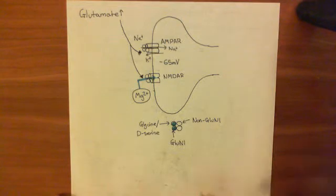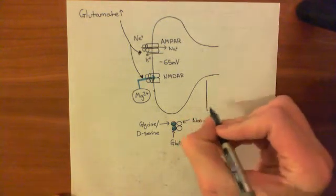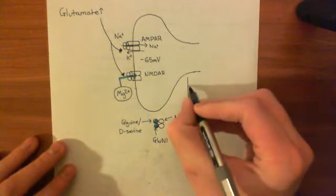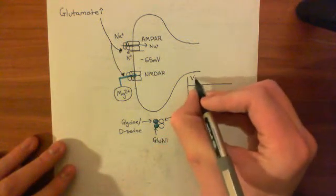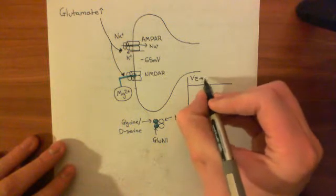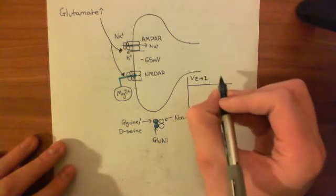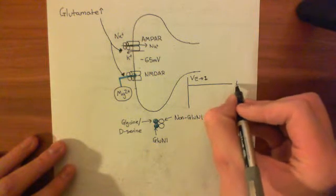So if we plot a graph, let's plot a graph of voltage across from the extracellular to the intracellular compartment against time.